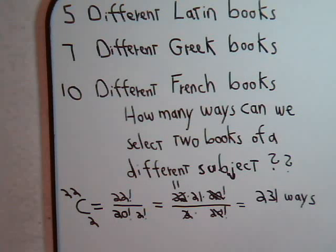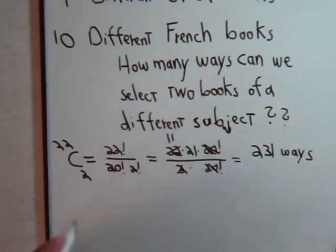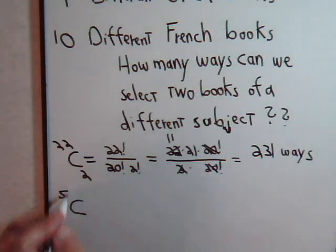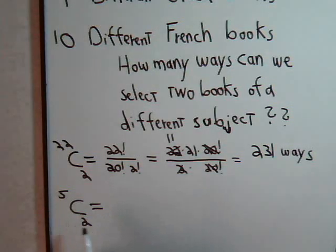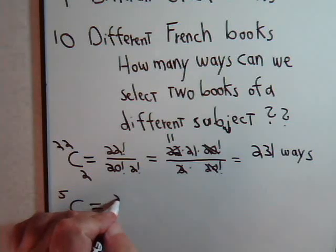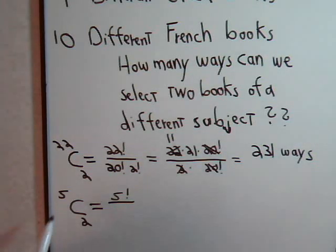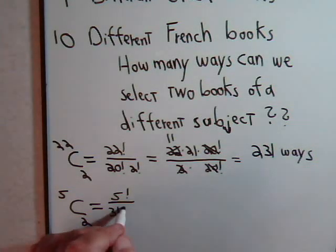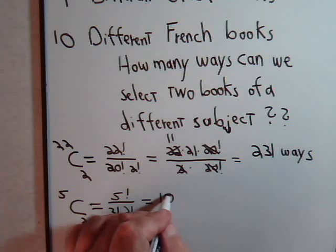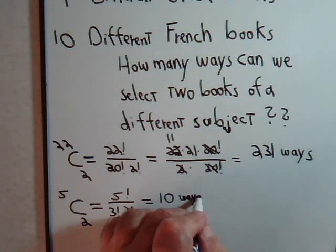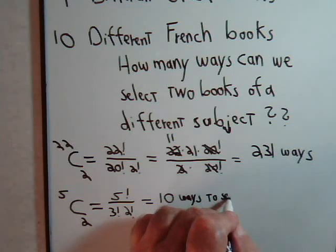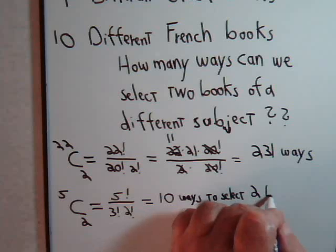We have five different Latin books. How many ways can we select two of them? The order doesn't matter, so that's C(5,2), which equals 5 factorial divided by 3 factorial times 2 factorial. That equals ten ways to select two Latin books.